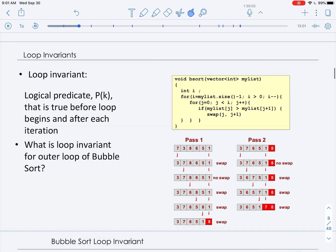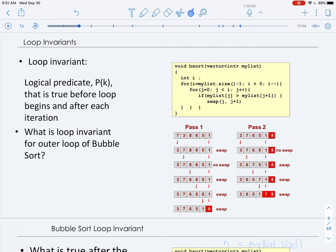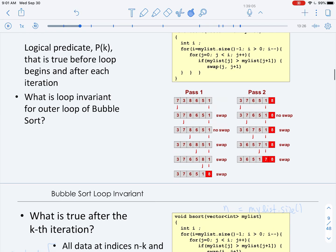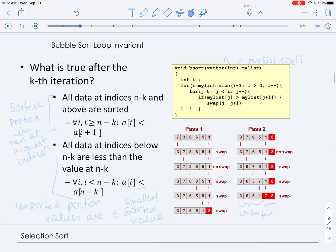Now, we want to consider the concept of loop invariant. So a loop invariant is a predicate that is true before the loops begin and after each iteration. So now we want to think about what is the loop invariant for the outer loop of bubble sort, for each iteration of bubble sort. So what is true after the kth iteration of bubble sort? So we can think about this before we start, before we do any iterations. Let's see what would be true.